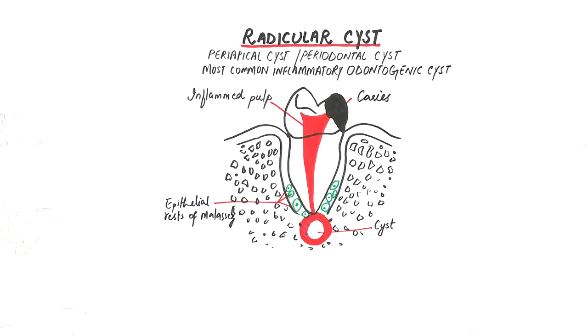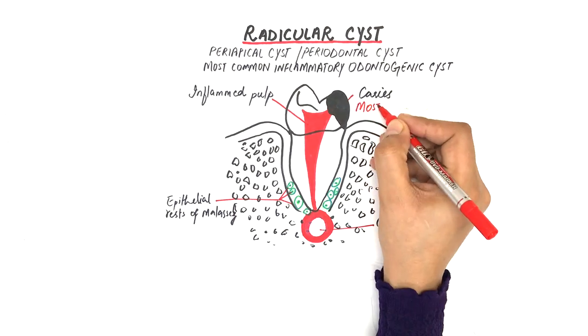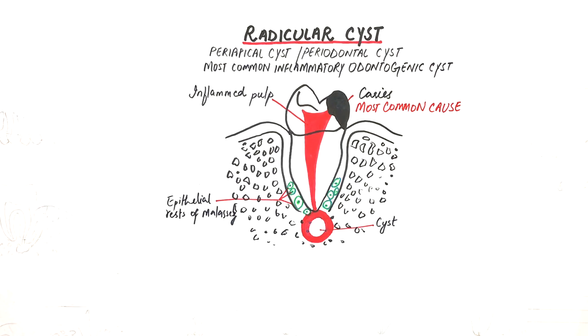The source of inflammation of the pulp most frequently is a carious lesion. However, trauma or defective restorations could also be a cause of this pulpal inflammation of a tooth.